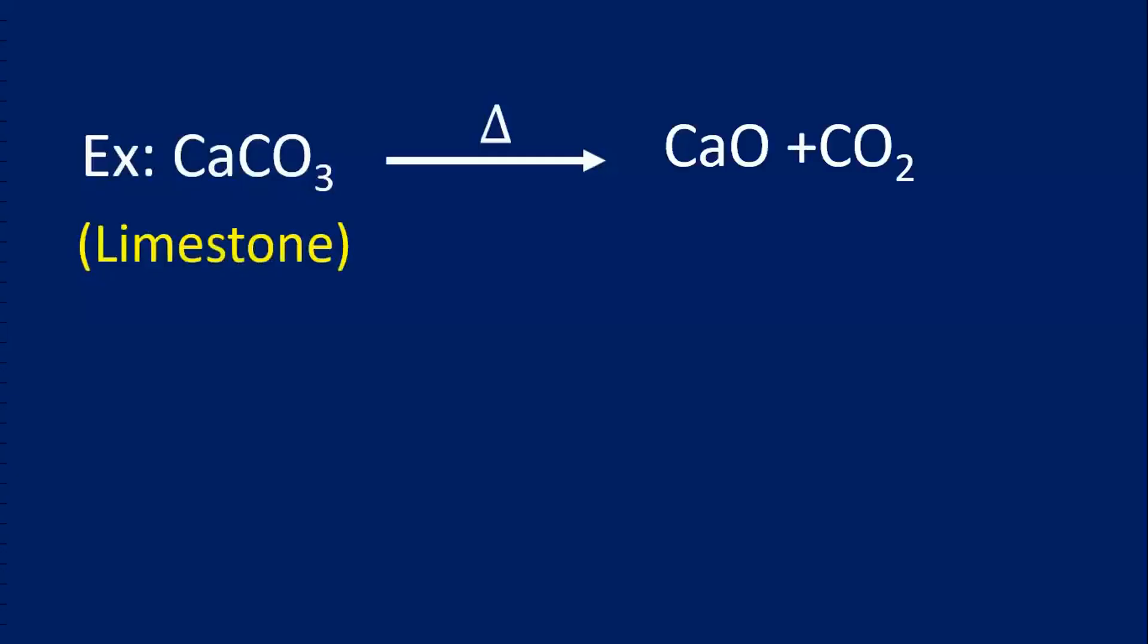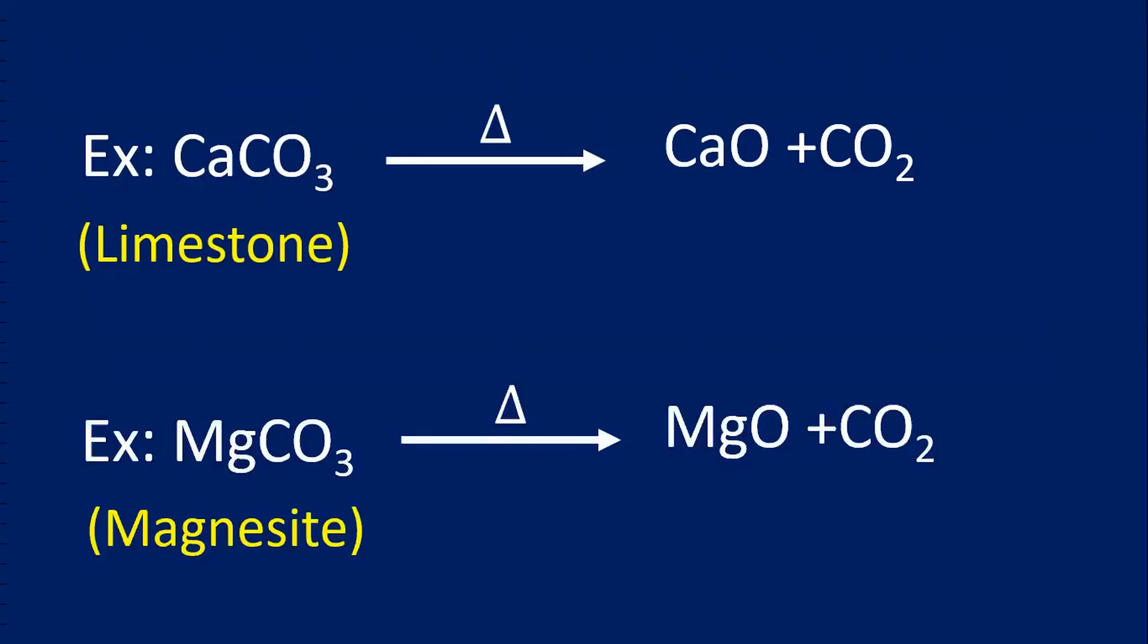Example one, limestone. When this is calcinated, these are the products. Magnesite, MgCO3. When this is heated in the absence of air, means calcinated, carbon dioxide gas escapes out.